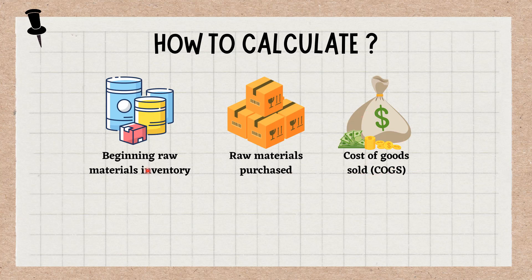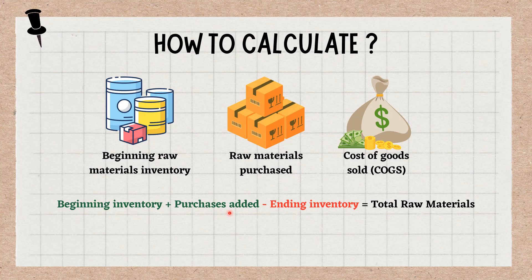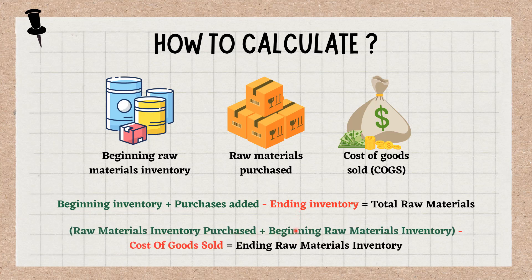With these things in mind, you can calculate the total raw materials your business is holding by using the following formula: beginning inventory plus purchases minus ending inventory equals total raw materials. Businesses will predominantly use the raw materials inventory formula for finding the ending inventory amount for an accounting period. Remember, the ending raw materials inventory is used as the beginning raw materials inventory for the following period. This formula is as follows: raw materials inventory purchased plus beginning raw materials inventory minus cost of goods sold equals ending raw materials inventory.